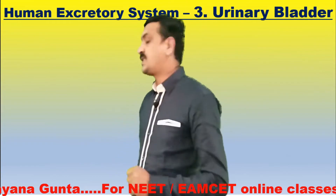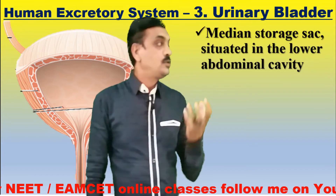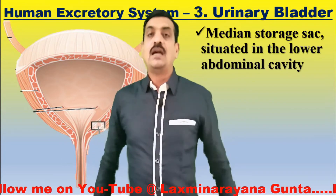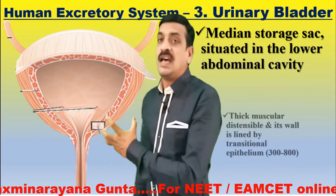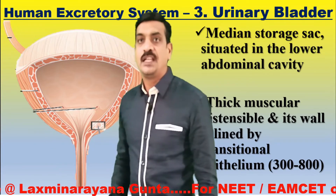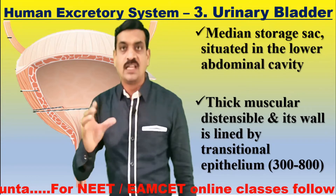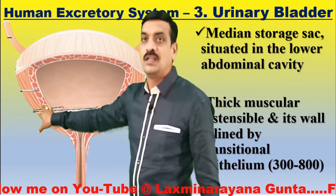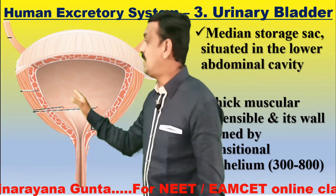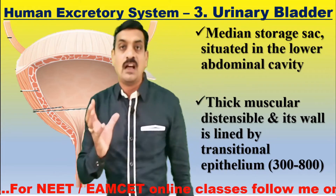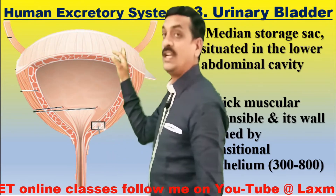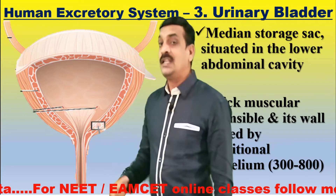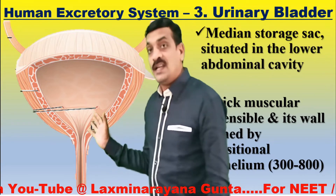The next part of the human excretory system is the urinary bladder. The urinary bladder is a medium storage sac — a pear-shaped structure situated in the lower abdominal cavity. It is thick, muscular, and highly distensible, and its wall is lined by transitional epithelium. This transitional epithelium may have 5 layers at rest, becoming 2 to 3 layers when filled. Our urinary bladder is capable of storing 300 to 800 ml of urine. We feel the urge to urinate when it fills to about 400 ml, though it can store up to 800 ml.